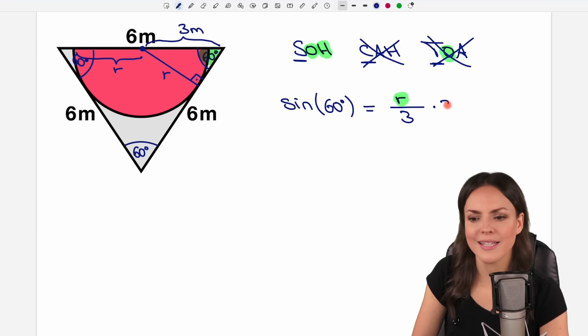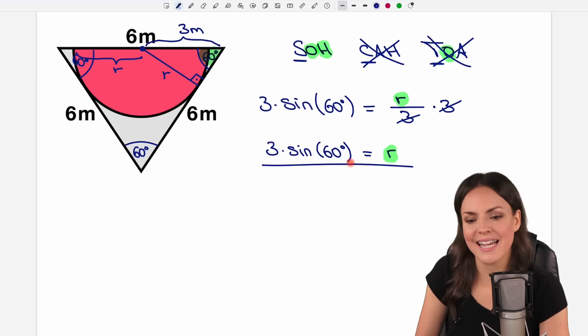So we multiply both sides by three. On the left side we get this expression then. And on the other side the three cancels out and only our r is left. Now you can type in this expression into your calculator and get a result. Or we just take this exact value and I wrote it down here again.